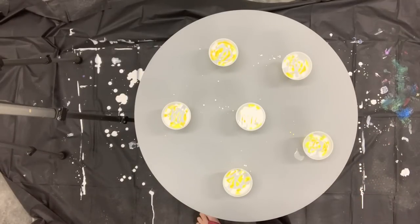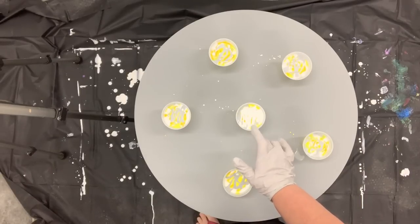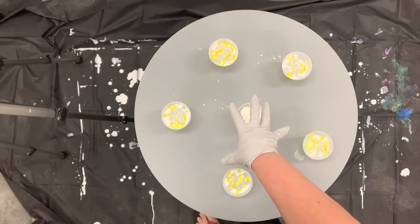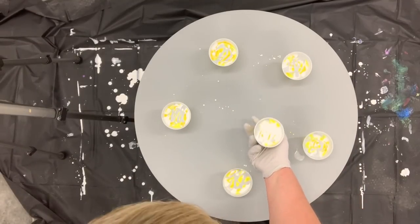Alright, I have my paints all layered in my cups. I poured this one a little bit higher so the middle will have a nice coat of paint, and then I've got my five others around the surface. I'm just going to flip these over.